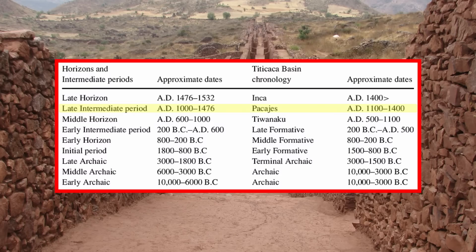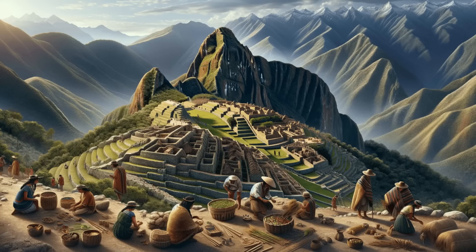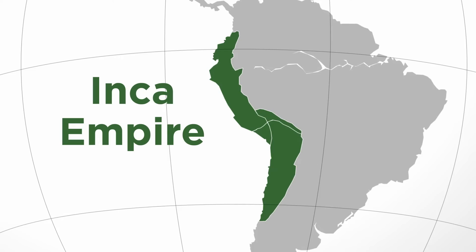As the power of these civilizations waned and the late intermediate period began, the region split into many city-states. This left a vacuum of power, which was taken by a growing state called the Inca. This marks the beginning of the late horizon, 1476–1535. The Inca Empire came to control all of the Andean region, becoming one of the largest empires in the world. They also greatly expanded the road networks begun by earlier civilizations.